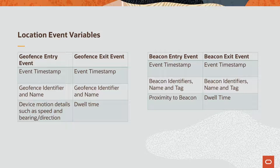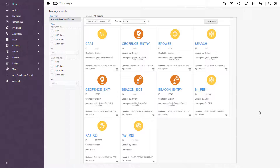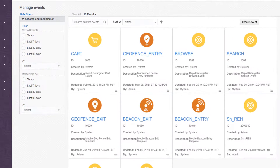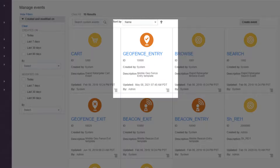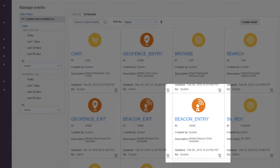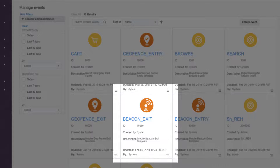For geofences and beacons to be customized and taken advantage of to their full potential, they leverage a data structure that is built up of location event variables. Location event variables are variables that can be managed in the REI. The four relevant location events for geofences and beacons consist of geofence entry, geofence exit, beacon entry, and beacon exit.